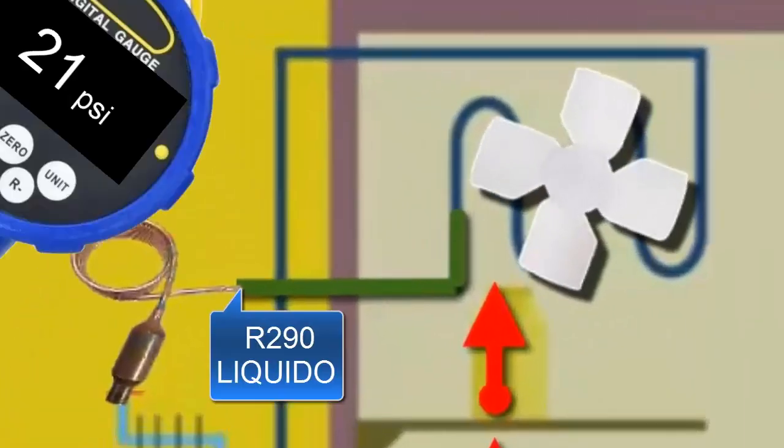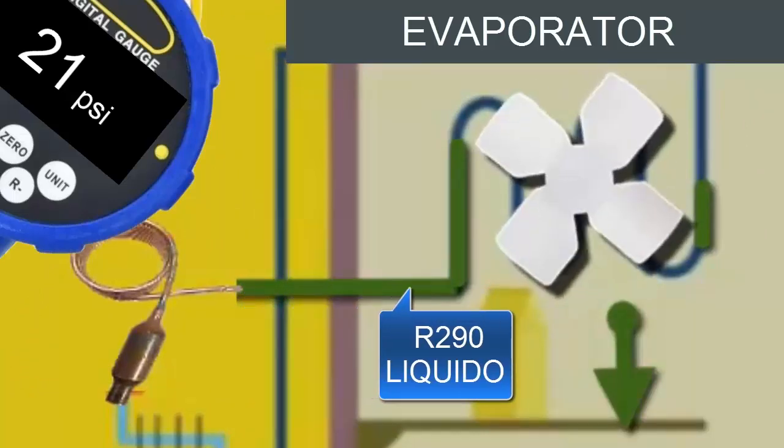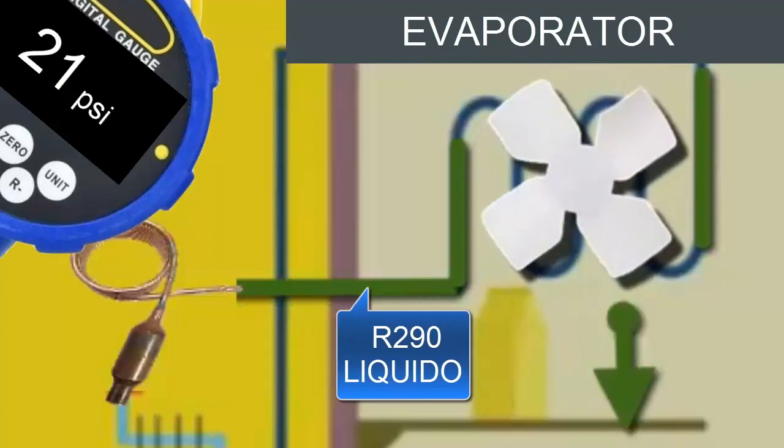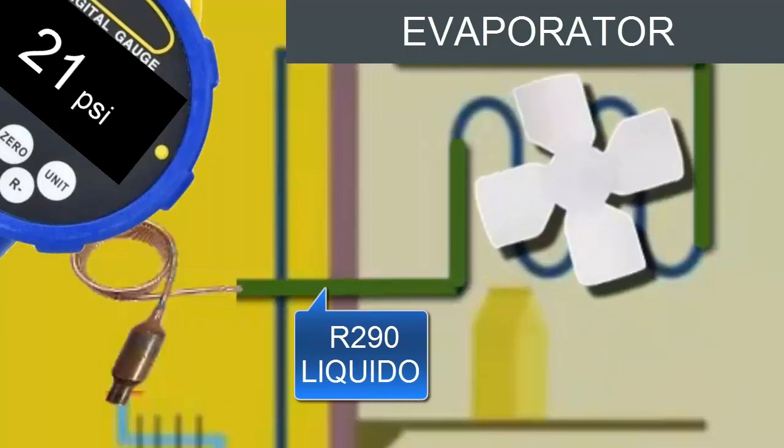The R290 refrigerant enters the evaporator in a liquid state at a pressure of 21 pounds per square inch. The equivalent pressure value of the evaporator in bar units is 1.44 bar.